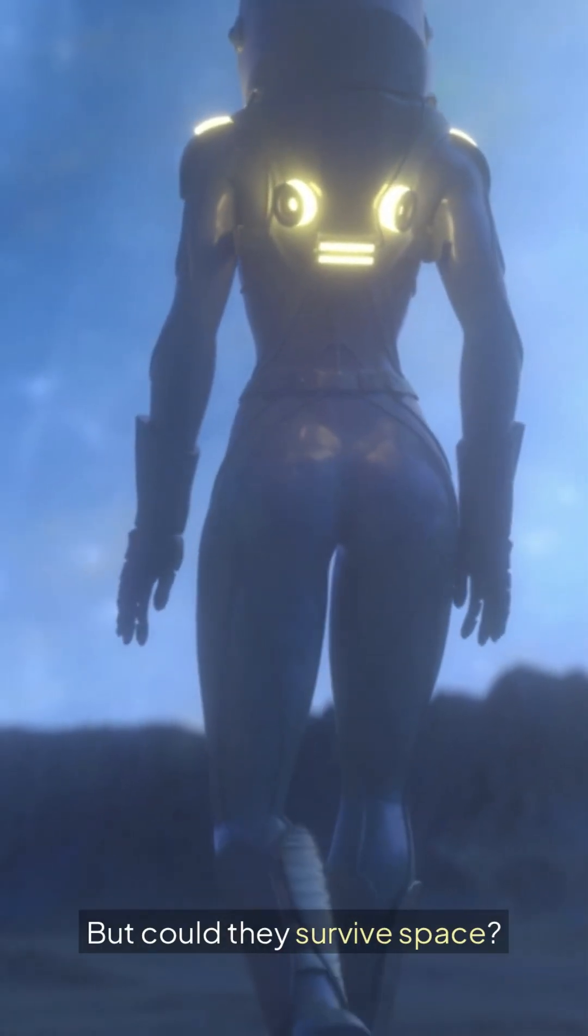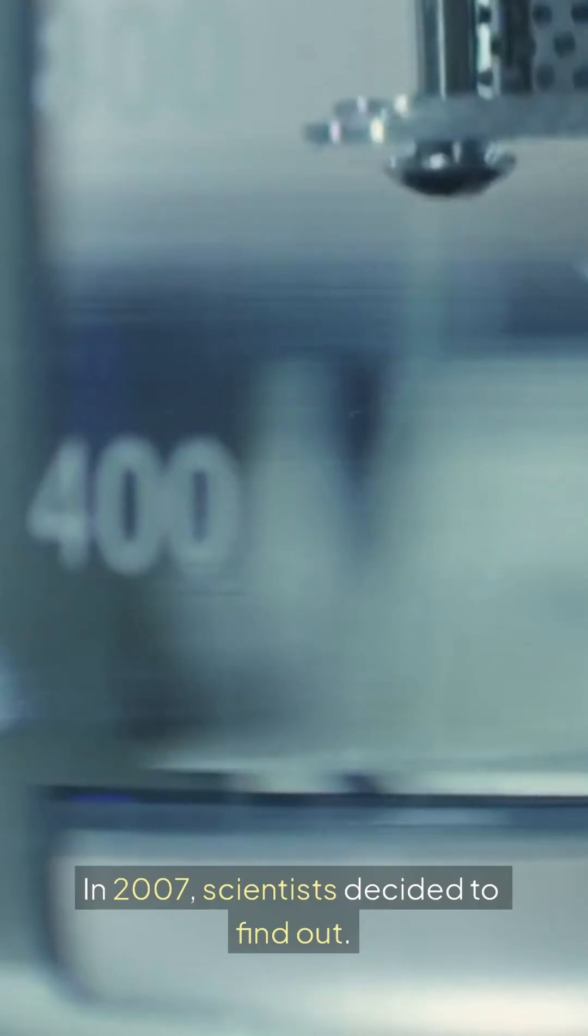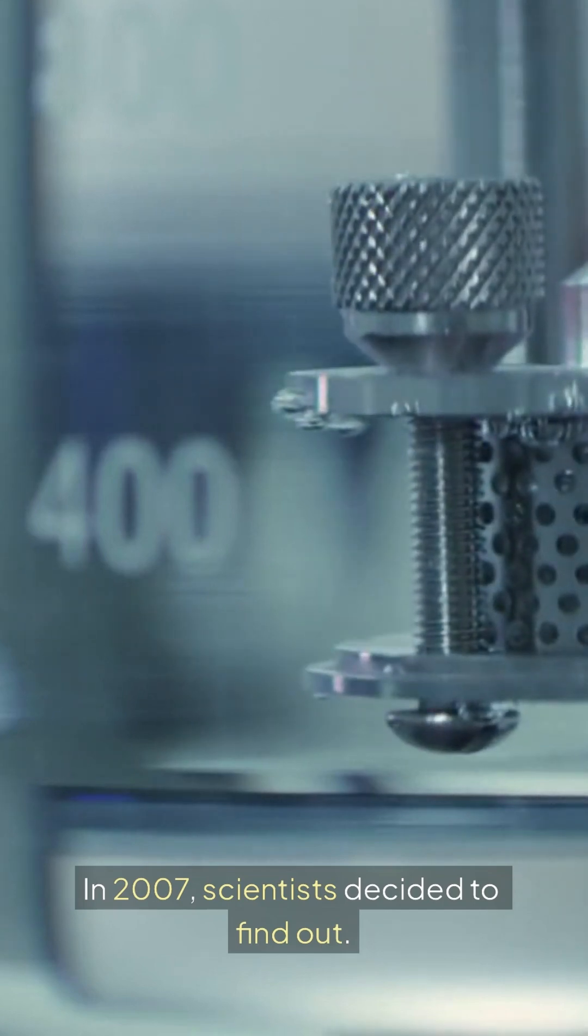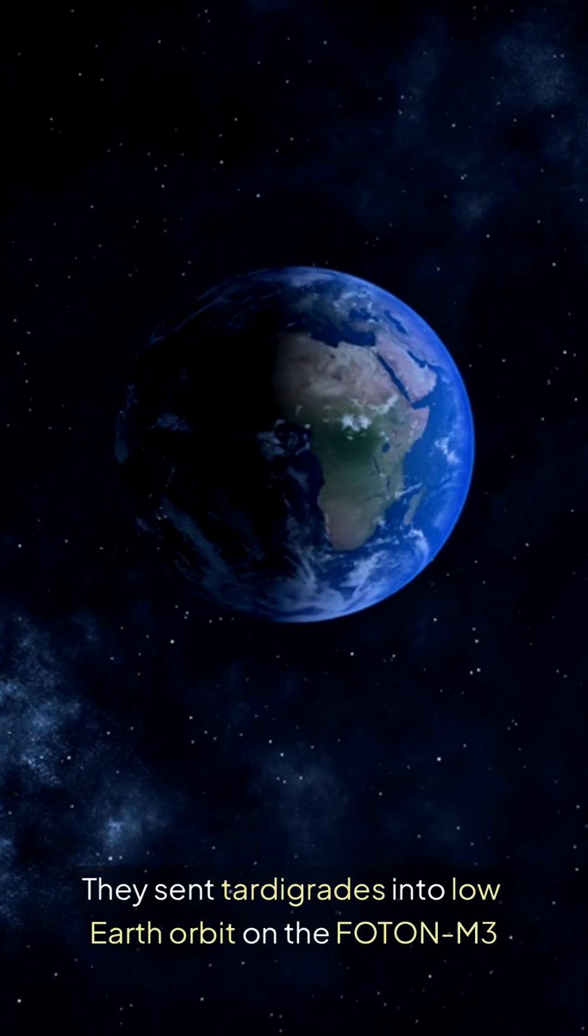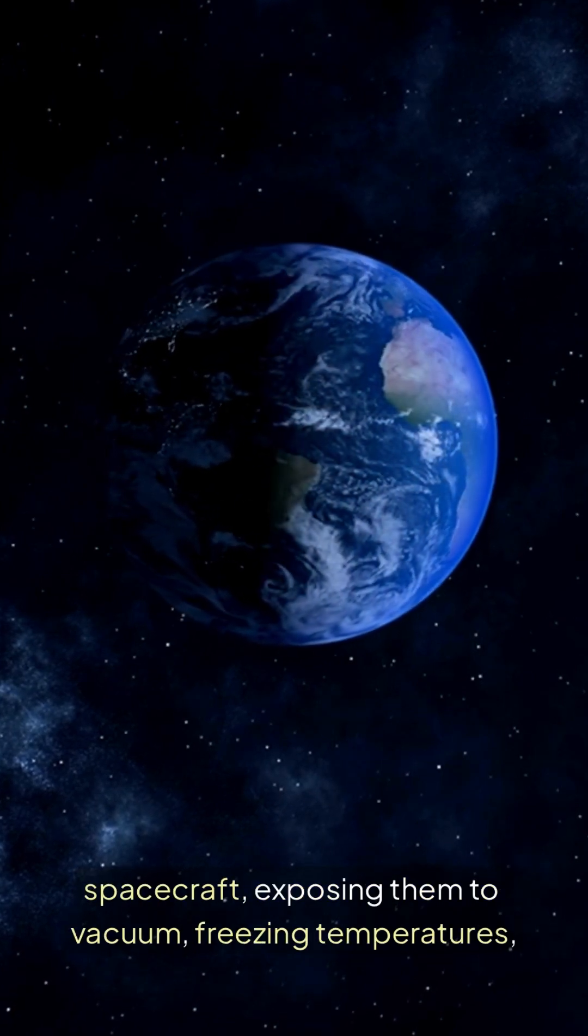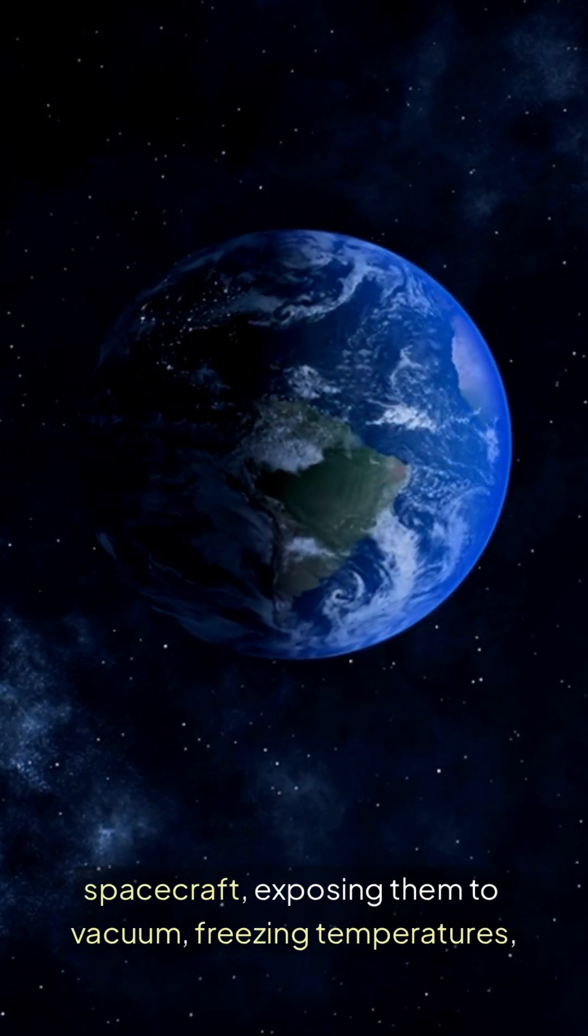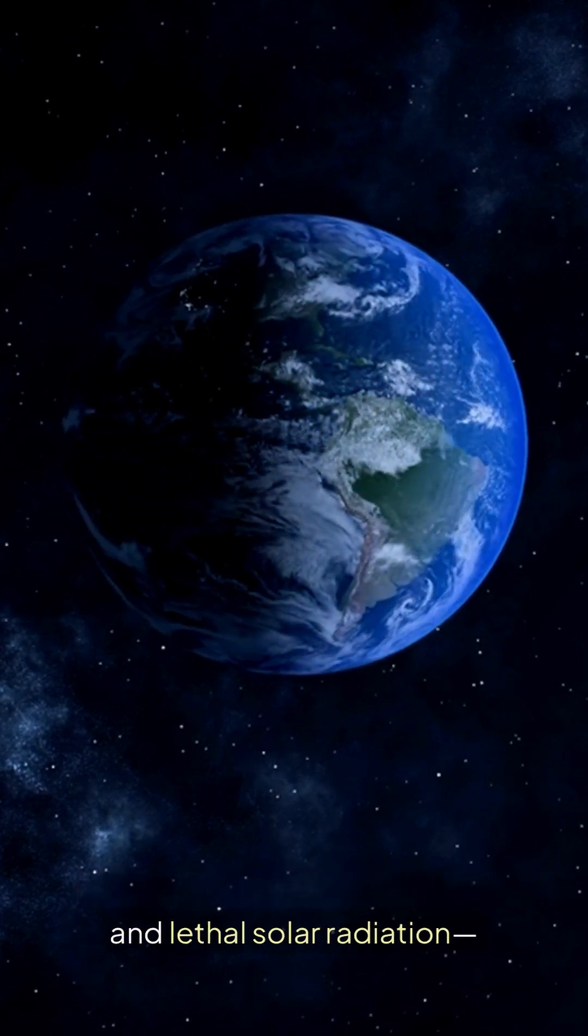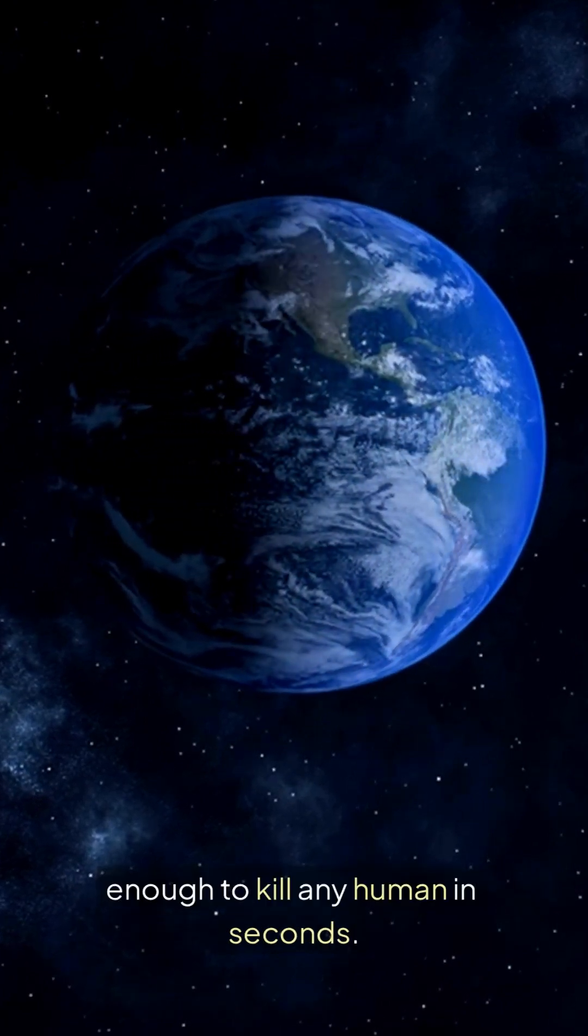But could they survive space? In 2007, scientists decided to find out. They sent tardigrades into low-Earth orbit on the Photon M3 spacecraft, exposing them to vacuum, freezing temperatures, and lethal solar radiation, enough to kill any human in seconds.